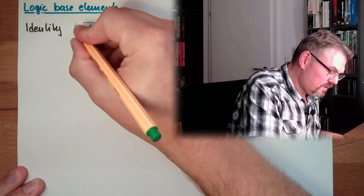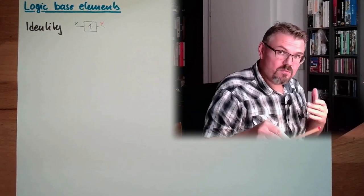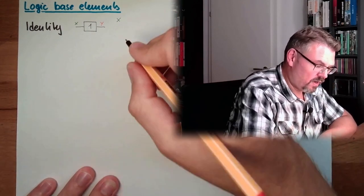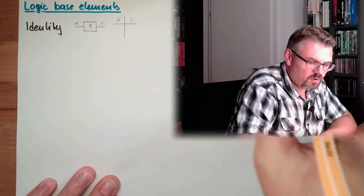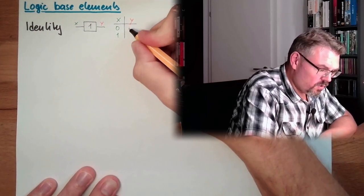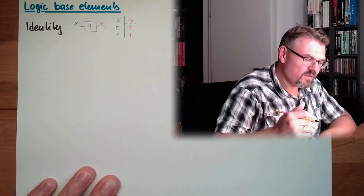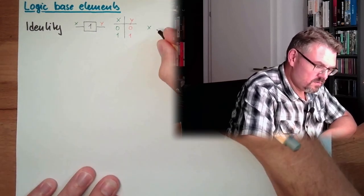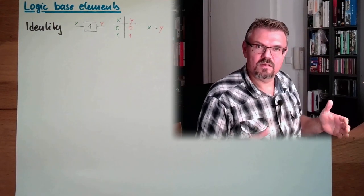We have an input x and an output y. The table of truth: if I note here x and here y, and make all possible combinations of x — the possible combinations are 0 and 1 — and the output is 0 and 1. The Boolean equation, which we will discuss in later videos, is x equals y. That's the identity — it's the same as before.